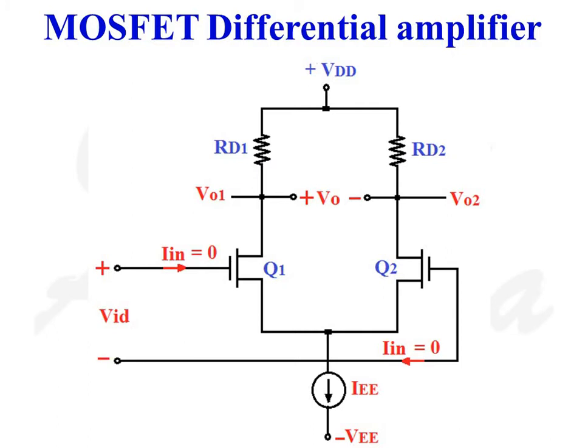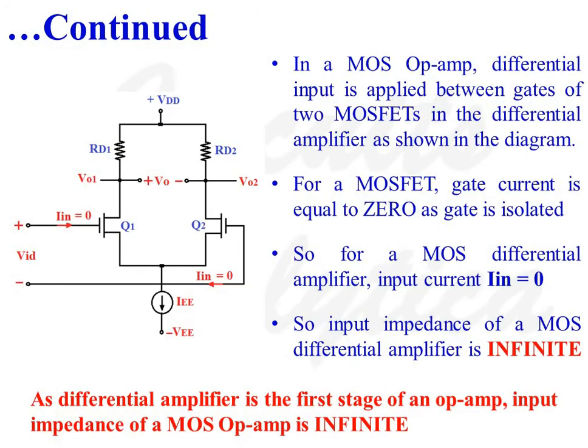This is the diagram of a MOS differential amplifier. There are two transistors Q1 and Q2. The output is taken between the drain of the two transistors, where V0 equals VD1 minus VD2 — where VD1 is the drain voltage of transistor Q1 and VD2 is the drain voltage of transistor Q2. In a MOS operational amplifier, the input signal is applied between the gates of the two MOSFETs in the differential amplifier, as shown in the diagram.